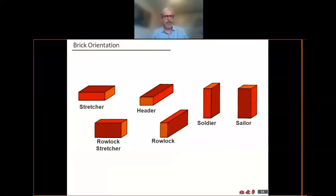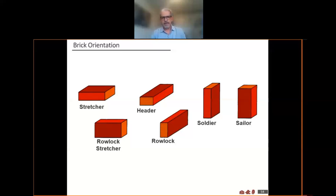A little on bond patterns. Stretcher is obviously the one we see the most. Header would be probably the next most common, although you won't usually see a header used as a full brick — usually cut brick is used for that purpose. Any of the other applications — row lock, row lock stretcher, soldier, and sailor — all have the potential to show the core holes unless you're using a solid brick, and so are used much less often.